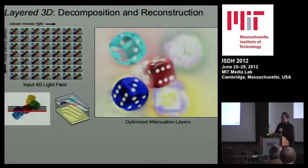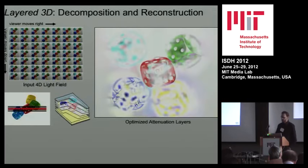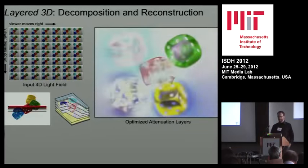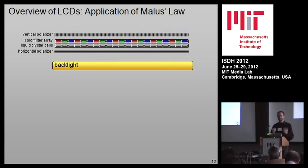The output of the computed tomography reconstruction looks like this: each of these images on the right is a different layer of the device. I asked it to find layers that, when you add them up along different lines, result in these different images when viewed from different perspectives.